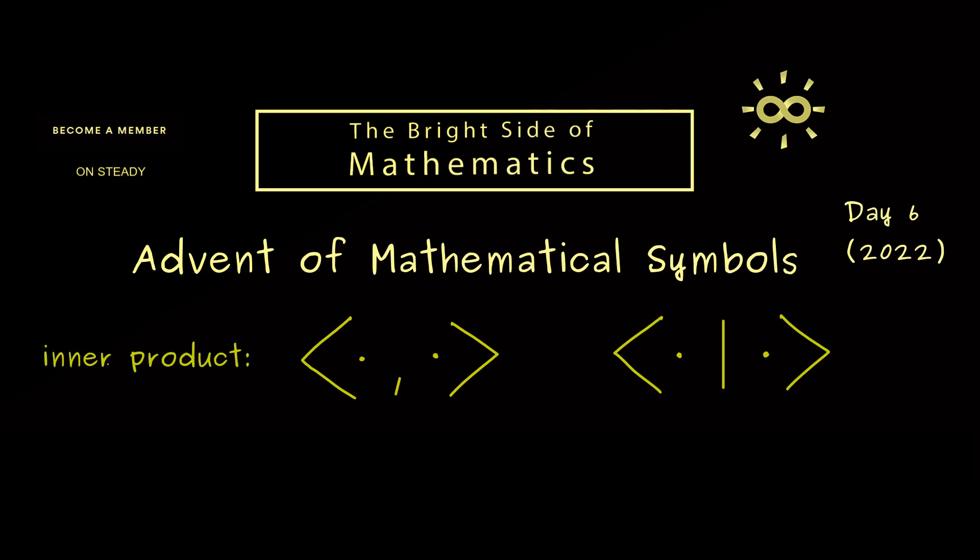This means it's a special multiplication we find in a vector space. You see one vector you would put here on the left hand side and another one here on the right hand side. Hence if we call the vector space V we can see it as a map defined on the Cartesian product V with itself. And then the outcome of this inner product calculation should be a real or complex number.